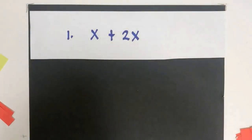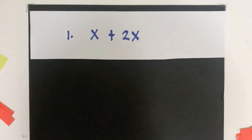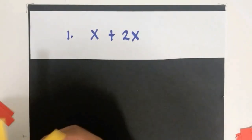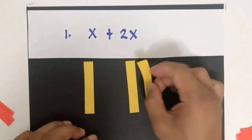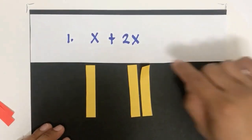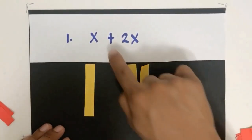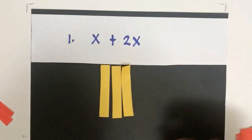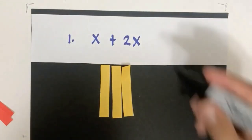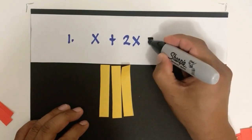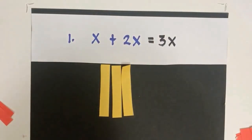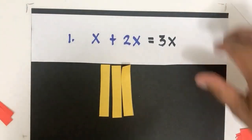Let's perform some operations with polynomials. For example, x plus 2x: this is our x, and 2 of that would be 2x. If we add them, the plus operation means we combine them. Since they are all of the same kind, x plus 2x equals 3x.